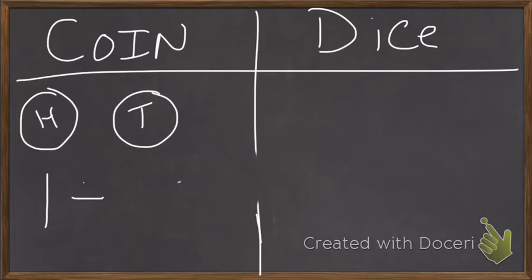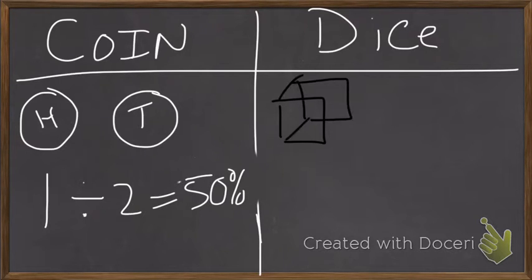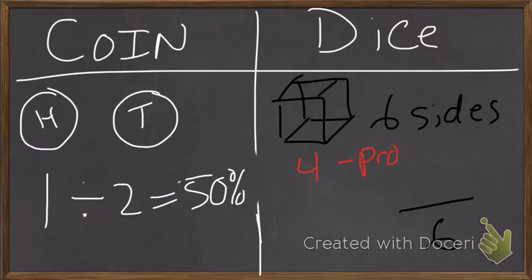So 1 divided by 2 equals 50%. If we look at our die, our die is a cube with 6 sides. Because that's 6 sides, that means there's 6 possible outcomes. And if we were looking at the probability of rolling a 4, for example...